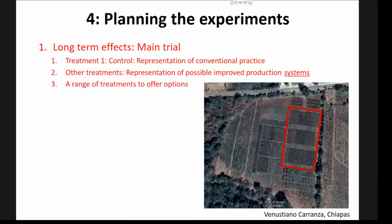We identify possible solutions, which then become the treatments we evaluate in the platform. In general, we design a long-term main trial where we investigate practices that show results over the long term, such as conservation agriculture. One treatment will be the control — the representation of the local production system, or conventional practice — and then we have other treatments representing possible improved production systems.